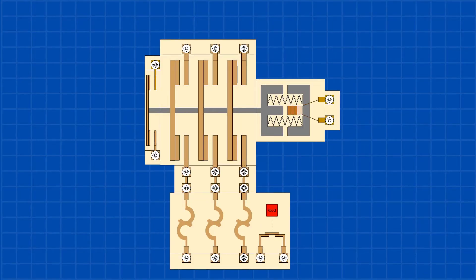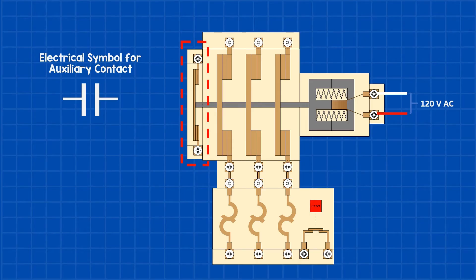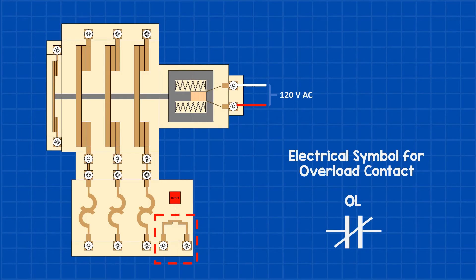Before we get into the 120 volt AC control side, we need to talk about two other components on the starter: the auxiliary contact and the overload contact. These will play a key role in the start-stop control circuit. The auxiliary contact is connected to the main contactor and closes at the same time. It's mainly used in the control circuit to show when the contactor is activated. It also helps latch the circuit, but I'll explain that in more detail when we get to the control circuit. An overload contact is a normally closed contact that opens when an overload occurs and needs to be manually reset using a reset button. In the control circuit, it disconnects the circuit when an overload is detected.